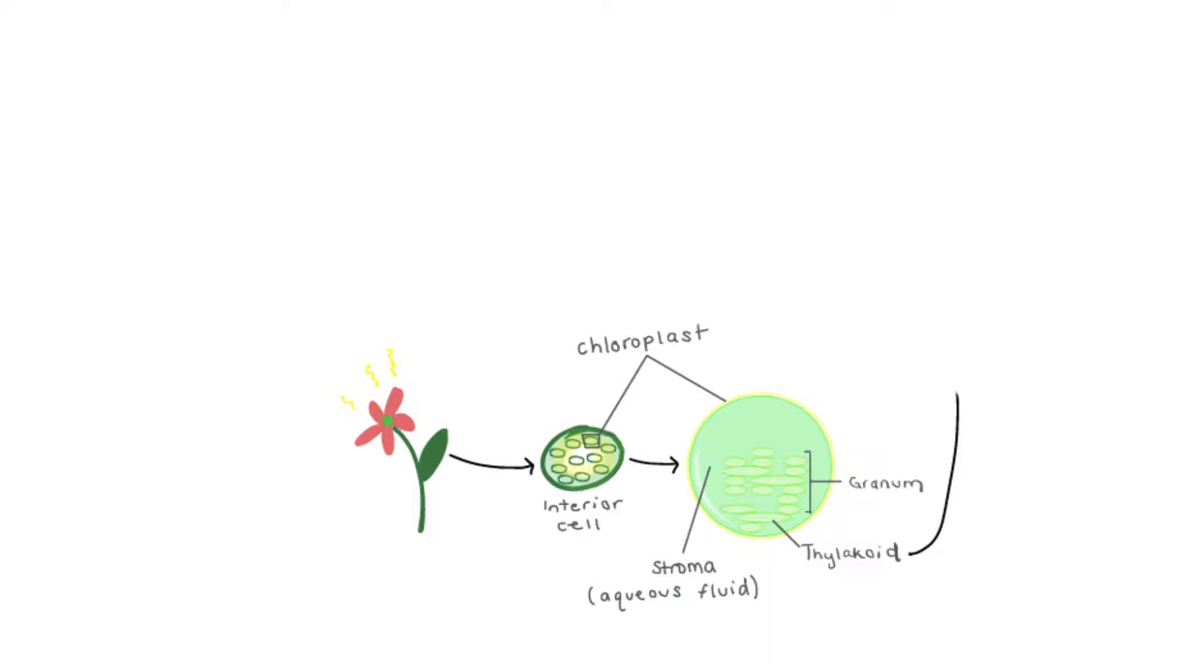The stroma is the aqueous fluid that holds the different parts together. The thylakoid contains photosystem 1 and 2, which are key molecules to the function of the photosynthesis chain. The granum is stacks of thylakoids.